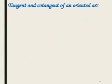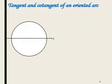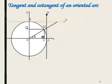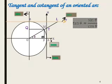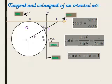Important things we are going to learn are the tangent and cotangent of an oriented arc. The tangent is equal to sine over cosine, and the cotangent is equal to 1 over tangent. That is why tangent alpha times cotangent alpha is equal to 1.